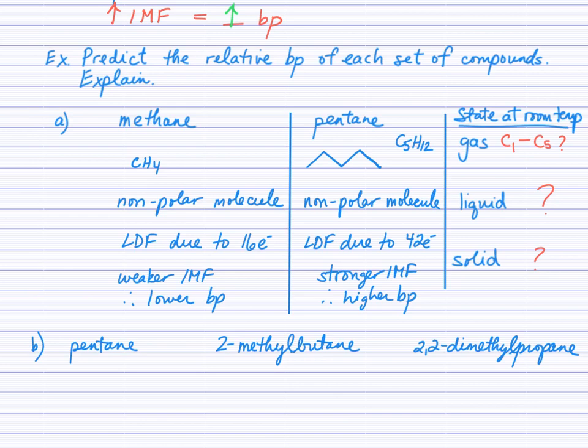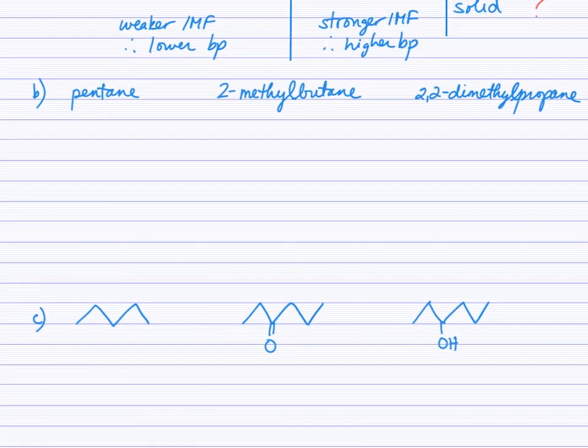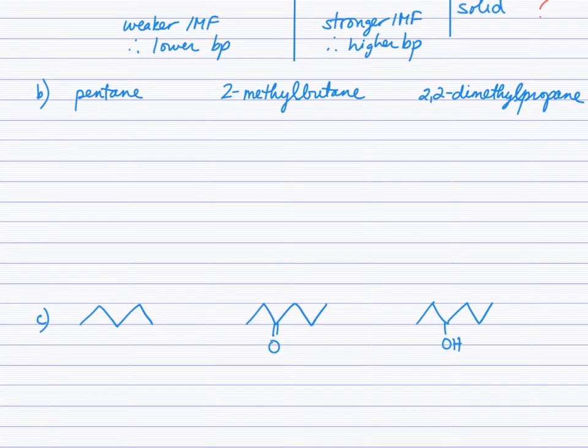Part B: working again with names of structures you're familiar with, these were three of the isomers of C5H12: pentane, 2-methylbutane, and 2,2-dimethylpropane. I suggest you draw these structures and predict the IMF and then relative boiling points from there.